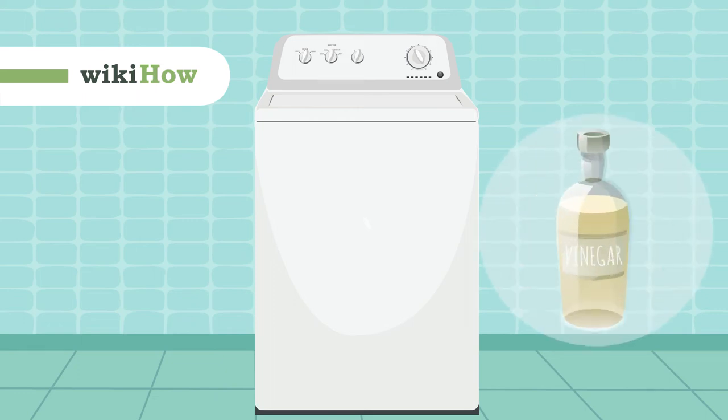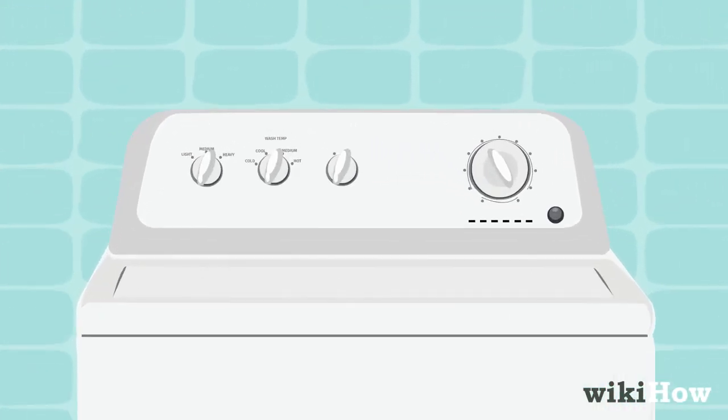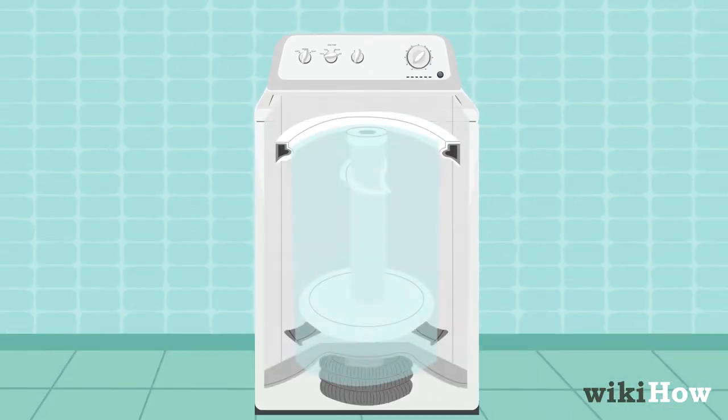To clean a top-loading washing machine with vinegar, set your washer on its longest and hottest wash cycle and wait for the basin to fill with water.